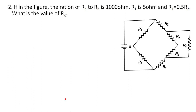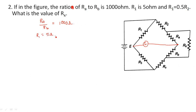Now, this is the Kelvin's double bridge, where the galvanometer is connected between specific terminals. The question gives: the ratio Ra to Rb = 1000, meaning Ra/Rb = 1000. Also, R1 = 5 ohms, and R1 = 0.5 × R2, so R2 = 5 / 0.5 = 10 ohms. We need to find the unknown value Rx.